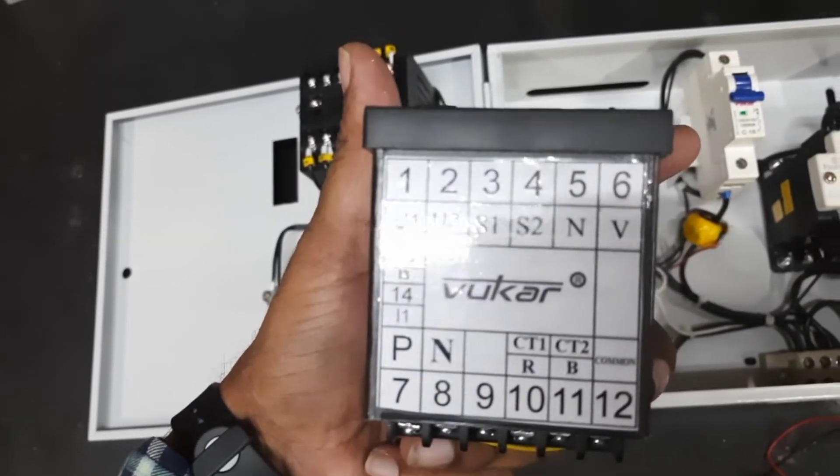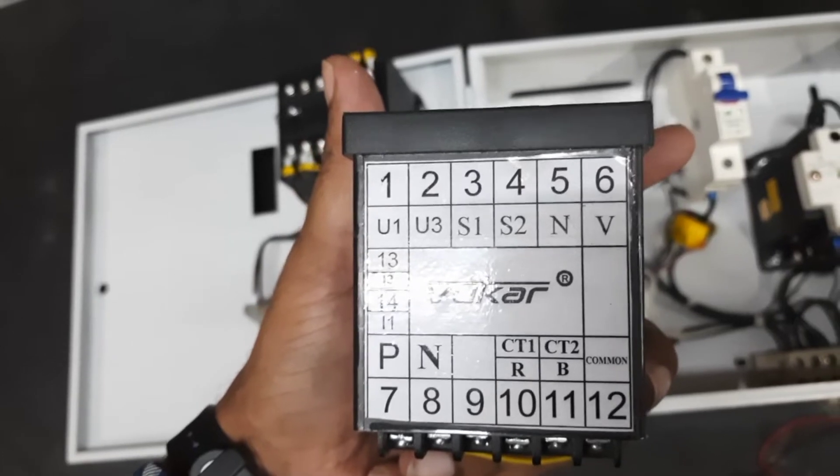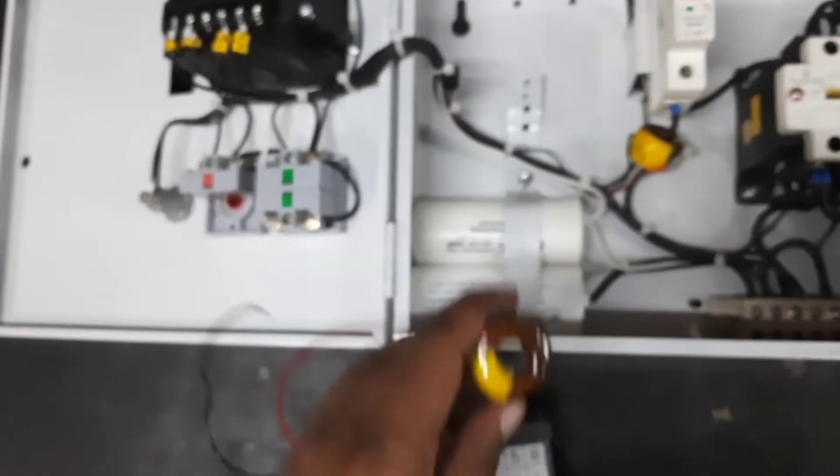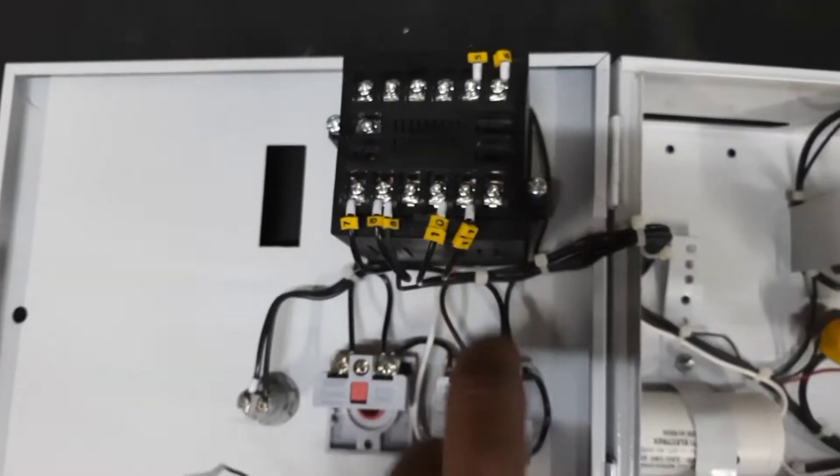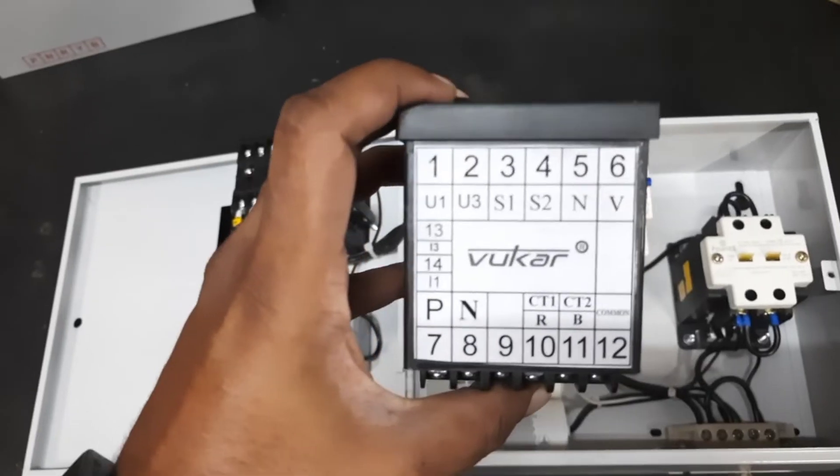Then terminals 10 and 11, that is for the CT terminal. A CT will be provided with the meter, so the CT coil is connected with terminals 10 and 11. Then terminals five and six will be used.